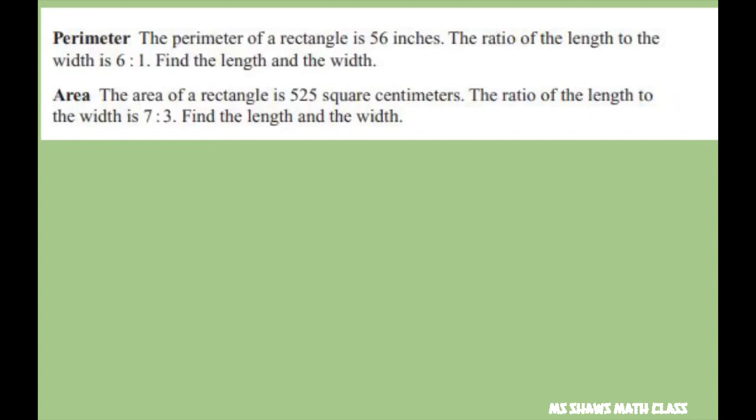Hi everyone. The perimeter of a rectangle is 56 inches. The ratio of the length to the width is 6 to 1. We have to find the length and the width. So first, our formula is perimeter equals 2L plus 2W.